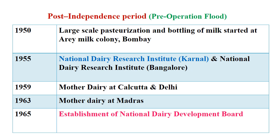In 1955, the National Dairy Research Institute was established in Karnal, with a related institute also in Bangalore. In 1959, Mother Dairy plants were established in Calcutta and Delhi under government control — the first large dairy plants in these cities. Later in 1963, a similar Mother Dairy was established in Madras, now called Chennai. Finally, in 1965, for the first time, the National Dairy Development Board (NDDB) was established — a major turning point for dairy development in India. This made the beginning for the large-scale scheme for developing the dairy industry through Operation Flood, which we will discuss in more detail.